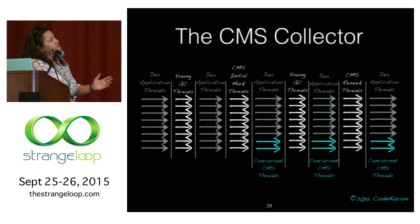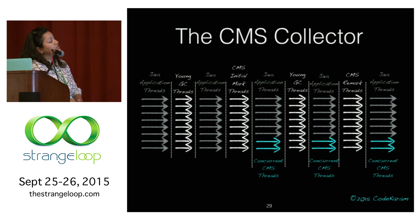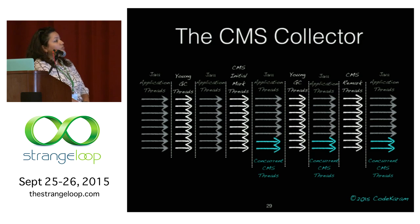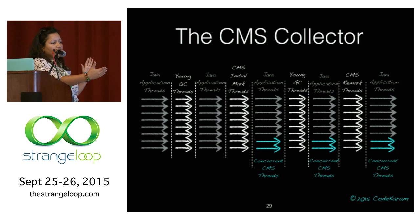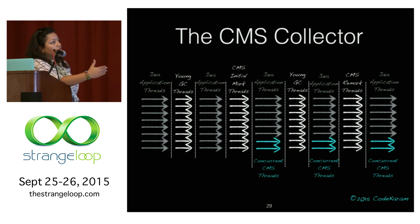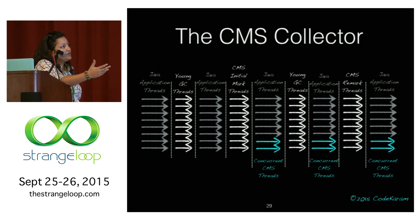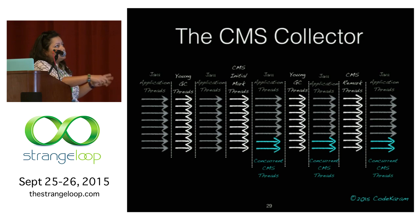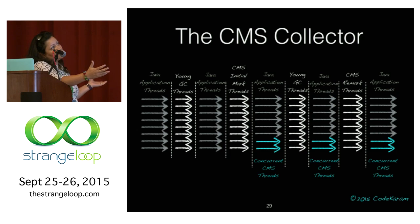CMS is very interesting. Young collections are similar to what you'd observe for the throughput GC. Once the marking threshold is crossed, you have initial mark threads — which are stop-the-world to mark the roots — and after that, concurrent CMS threads do the marking work. The concurrent phase runs alongside young stop-the-world pauses. Once that's done, there's a remark thread. Initially, initial mark and remark were single-threaded, but now they're multi-threaded. The remark identifies remaining roots and completes the object graph, and finally there's concurrent sweep.